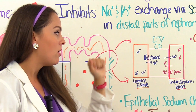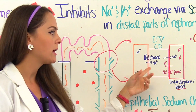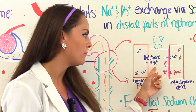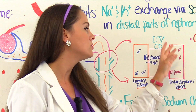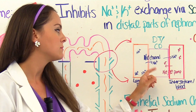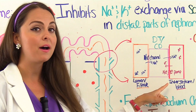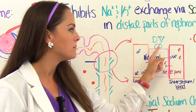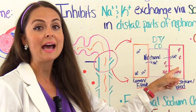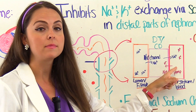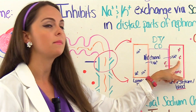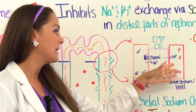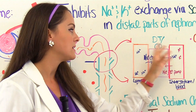One thing we want to concentrate on is the sodium channel. The sodium channel allows sodium to leave the filtrate and go into the cell. But once it's there, it needs to get into the bloodstream. A sodium-potassium pump helps do that — it takes the sodium and pumps it over into the blood, but it has to exchange something in return: it takes potassium and hydrogen ions and moves them in the opposite direction, back into the filtrate. So we have sodium channels and sodium-potassium pumps working together.